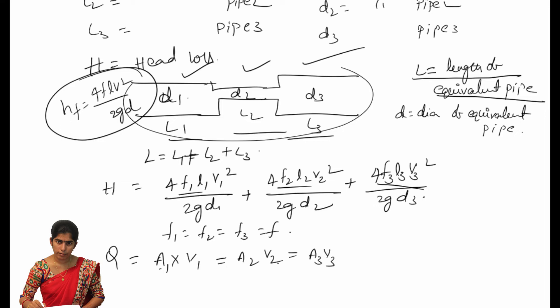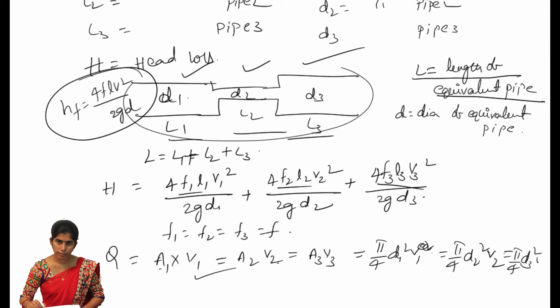These three should be equal from the continuity equation. If water is flowing from one pipe to another, then A1·V1 = A2·V2. Substituting the area formula A = π/4 · D², we get π/4·D1²·V1 = π/4·D2²·V2 = π/4·D3²·V3.